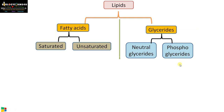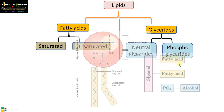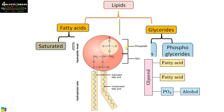Phosphoglycerides, as the term indicates, have a phosphate group. This is polar — there is a phosphate hydrophilic head group and a hydrophobic tail. This is called a phospholipid or phosphoglyceride. Here also there is a glycerol backbone.